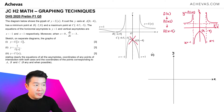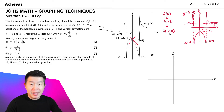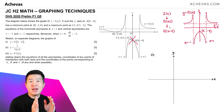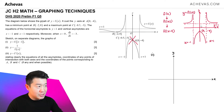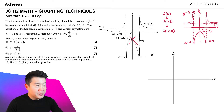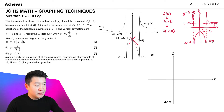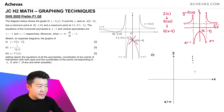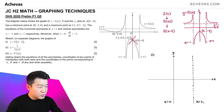From this graph, we do one more transformation to get what the question wants me to sketch: replacing x by x − 1, which is a translation by one unit in the positive x direction. The vertical asymptote x = −1 will become x = 0, and the vertical asymptote x = 1 will become x = 2.